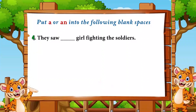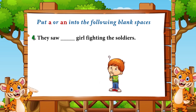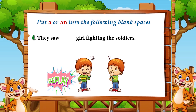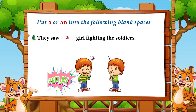Number four: 'They saw ___ girl fighting the soldiers.' The answer is 'a' — 'they saw a girl fighting the soldiers' — because 'girl' begins with a consonant sound.